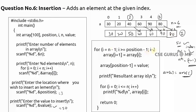The loop decrements i. Now i equals 4: array of 5 equals array of 4, so 90 is moved there. Next, array of 4 equals array of 3, so 60 is moved. Then 40 is moved. Now i value equals 2: array of 3 equals array of 2, completing the shift.